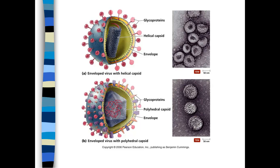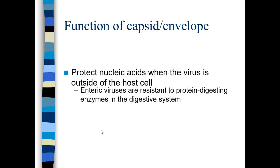Here are two different viruses. On top is an enveloped virus with glycoprotein spikes and a helical capsid on the inside. Below is an enveloped virus with a polyhedral 20-sided capsid. You can see the nucleic acid within the capsid takes on an amorphous shape, and there are many different types of glycoproteins within this particular envelope virus.